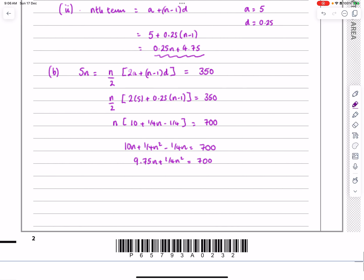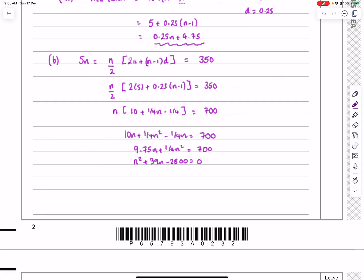Multiply everything by 4, I would say, just to make it easier in terms of the quadratic formula. So I'm going to get n² + 39n - 2800 = 0. And I say use formula because I've already done this. I've already done this question, so I'm not spending any time on this. n is equal to -39 ± √(39² - 4(-2800)) all over 2.